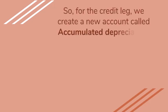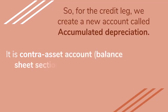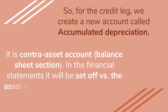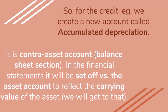So what we do is we create a new account called accumulated depreciation for every asset. So there will be an accumulated depreciation account for vehicles and a separate accumulated depreciation account for equipment. Now this account is a contra asset — contra asset means it's the opposite of an asset, or a negative asset. It's still in the balance sheet section. But in the financial statements we will set off the value of this accumulated depreciation account against the value of the asset account in the notes, so that we can reflect the book value of the asset in the financial statements. Just know that the credit leg is accumulated depreciation.